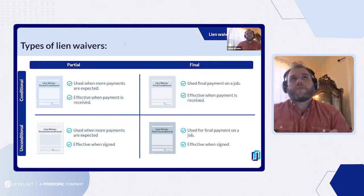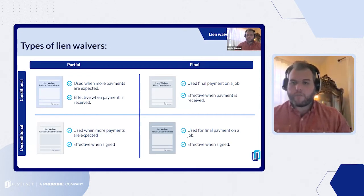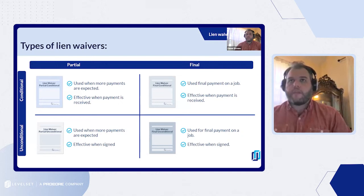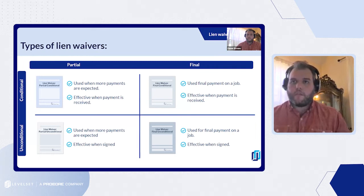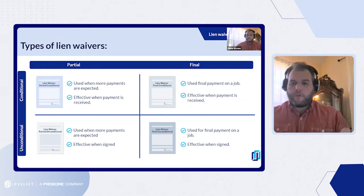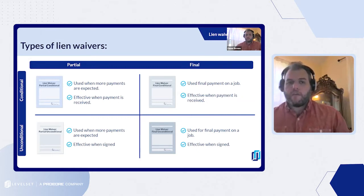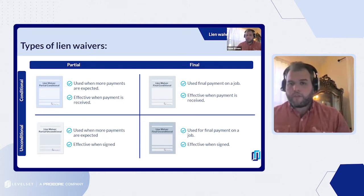Just a quick overview of lien waivers. We use this matrix to describe the different kinds of waivers that exist. Overall, depending on who's using them and how they're using them, they effectively are receipts. They protect the owner and the lender from any sort of lien claim because they have signed evidence of payment from across the entire payment chain. We use this matrix to describe the differences between partial waivers, final waivers, conditional and unconditional waivers, and we'll go a little bit more into that in the next slide.